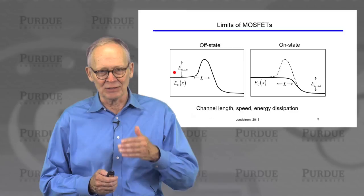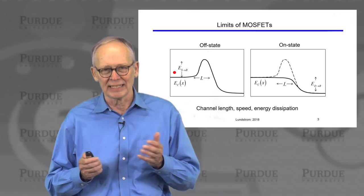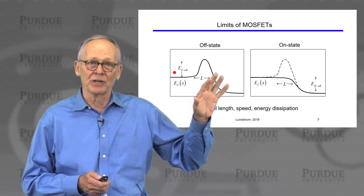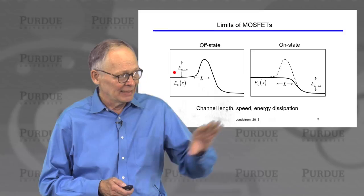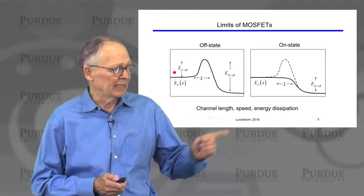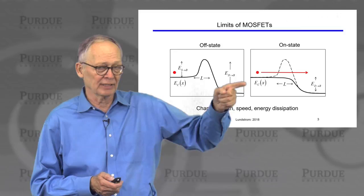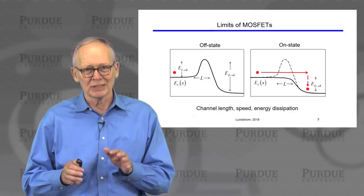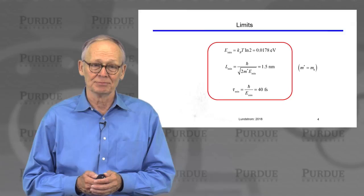In terms of the limits of MOSFETs, this is a very important question. Moore's Law — the continual downscaling of transistor dimensions, which has powered the increase in electronic performance for the last 50 or 60 years — is all about shrinking the size of transistors, so it's natural to ask how small we can make a transistor. Our energy barrier model of the MOSFET gave us a very simple way to establish some very fundamental limits. In the off state, we had a large barrier between the source and the channel, and an even larger barrier between the drain and the channel. In the on state, we push that barrier down, the electrons flow from the source to the drain, and then they dissipate their energy in the drain by inelastic scattering events.